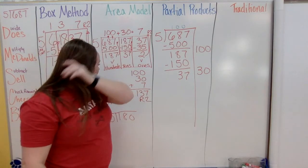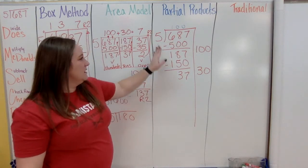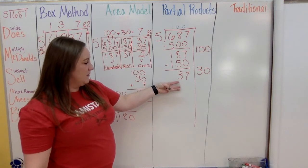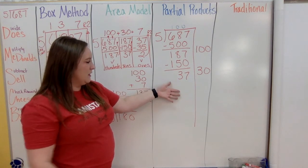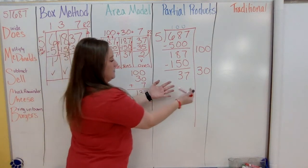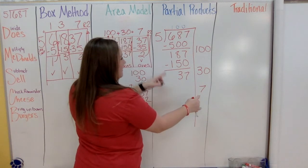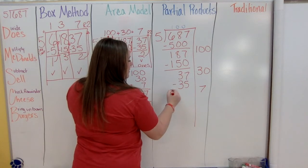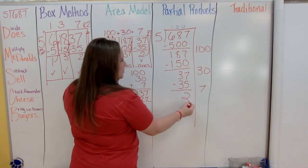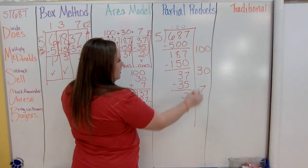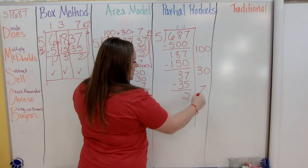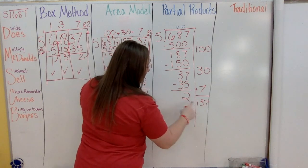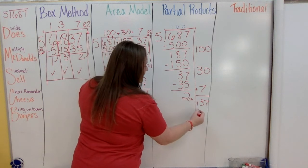Now focus on the ones place: 5, 10, 15, 20, 25, 30, 35 — so multiply by 7. Five times 7 is 35. Subtract: 37 minus 35 leaves 2. Add the partial quotients together: 100 + 30 + 7 = 137, and the remainder is 2.